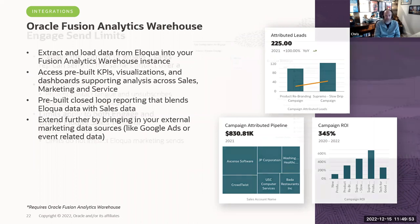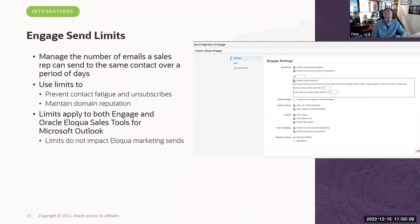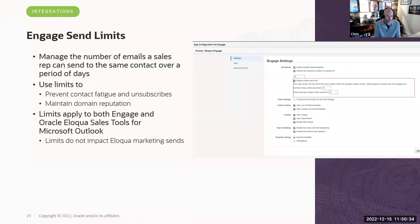Engage send limits were introduced earlier this year based on popular customer feedback. Customers wanted to control how many emails a sales rep could send via Engage so they wouldn't overwhelm prospects and customers. You can now set limits on the number of emails sent over a certain number of days via simple configuration. This applies to both Engage and Outlook integration.